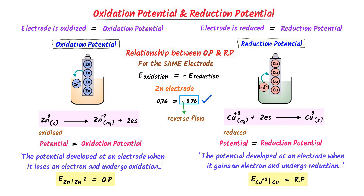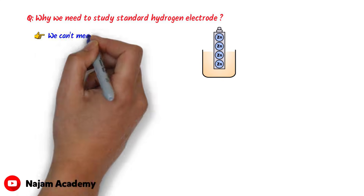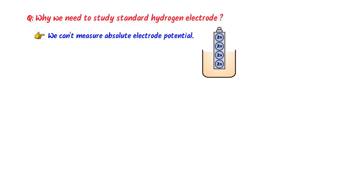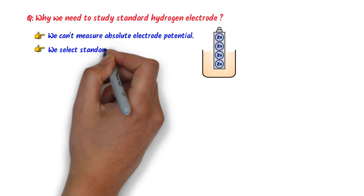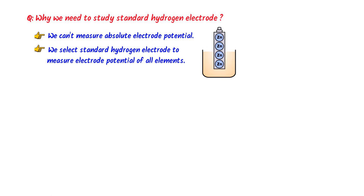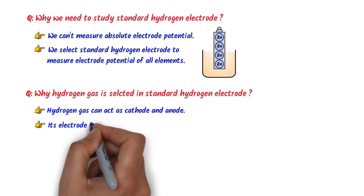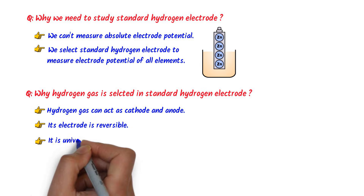Before teaching about the Standard Hydrogen Electrode, let me address two important questions. First, why do we need to study the Standard Hydrogen Electrode? We cannot measure the absolute or single electrode potential of zinc or any element. Therefore, we select the Standard Hydrogen Electrode to measure the electrode potential of all elements against it. Second, why is hydrogen gas selected? It is because hydrogen gas can act both as anode and cathode, its electrode is reversible, and hydrogen gas is universally available.